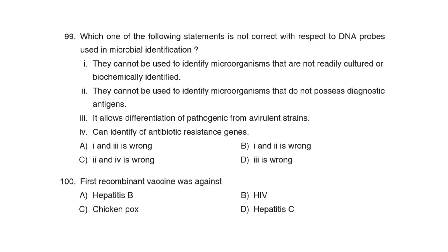99th Question: Correct Answer: Option B. 100th Question: The first recombinant vaccine was against Correct Answer: Option A: Hepatitis B. Thanks for watching.